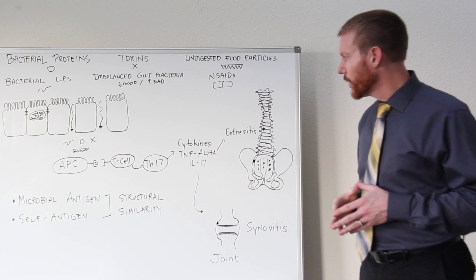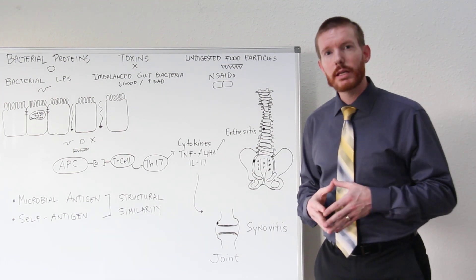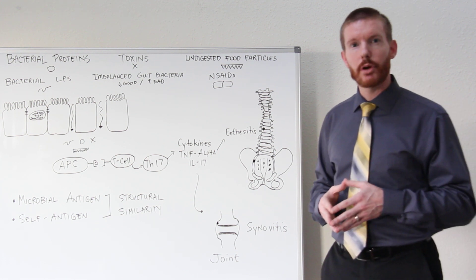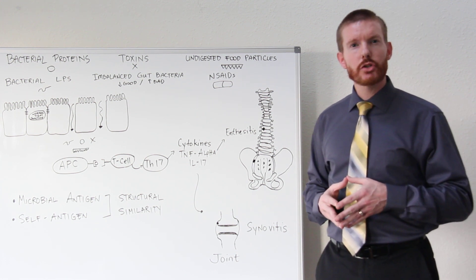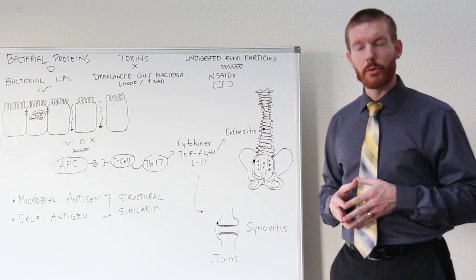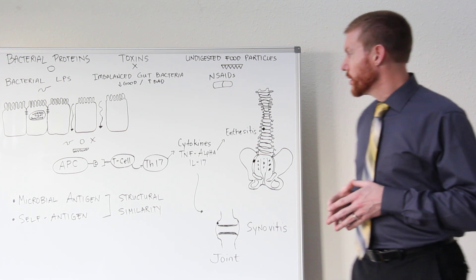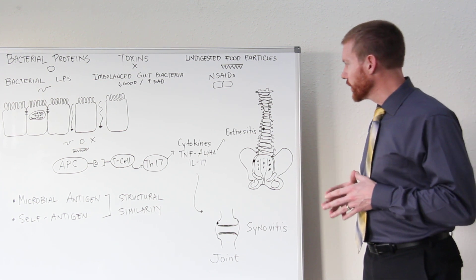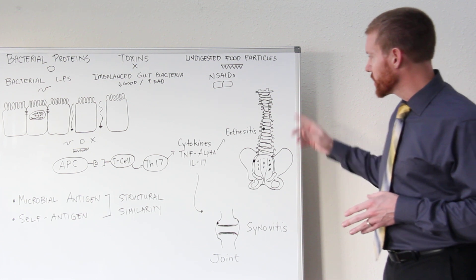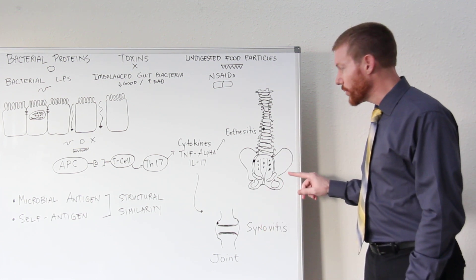Because of molecular mimicry that was previously discussed, these inflammatory chemicals now travel throughout the bloodstream and will attack structures that look similar to the bacterial proteins and toxins—structures such as tendons, ligaments, and joints of the spine, hips, and sacroiliac joints.